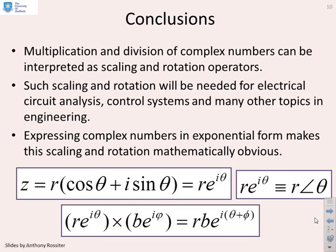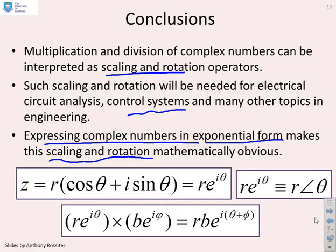Some conclusions. Multiplication and division of complex numbers can be interpreted as scaling and rotation, and we'll need that for many engineering examples. However, the key point here is if you express complex numbers in exponential form, then it makes this scaling and rotation mathematically obvious. Because what you can see is if I multiply complex number r e to the i theta by complex number b e to the i phi, I get a scaling of b and a rotation of phi. And we've also noticed that this new exponential form subsumes the form we were using earlier of r arg theta.